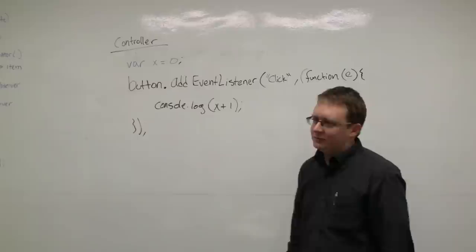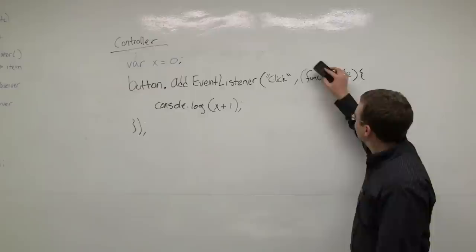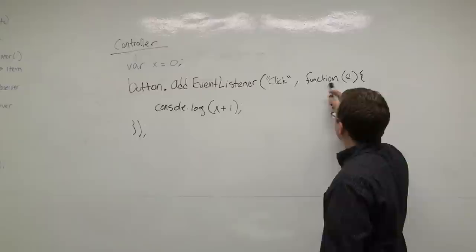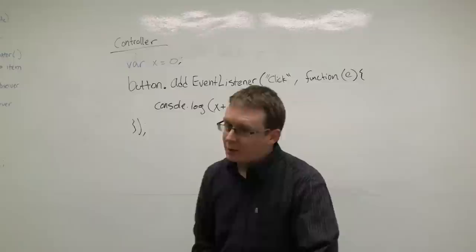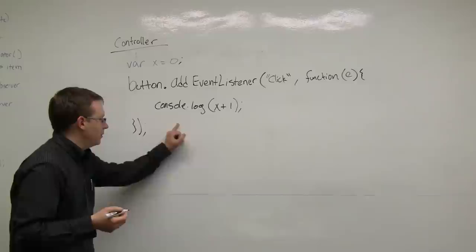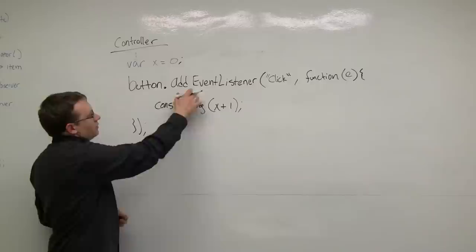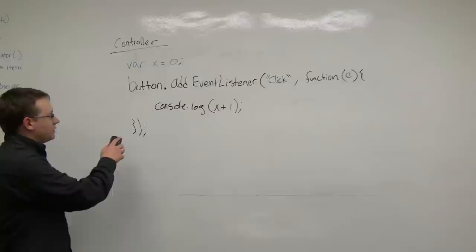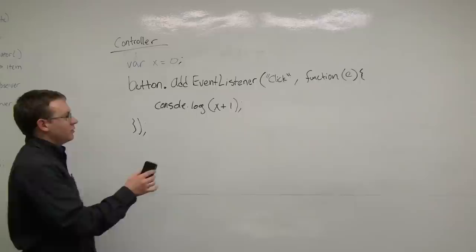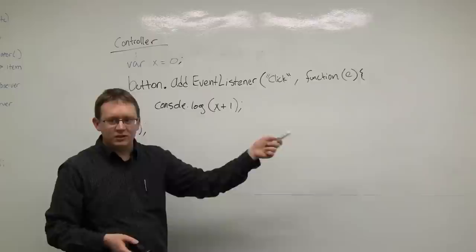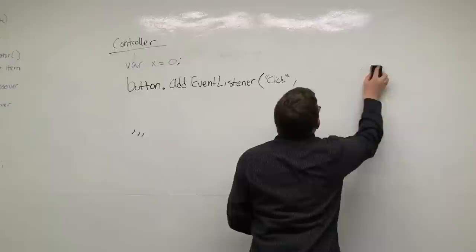There will come a time when you want to stop caring about what a button does. For memory management, get in the habit of removing event listeners when you're done. But if you used an inline anonymous function, you can't remove the listener because you need to pass back the exact function you used to register it — and you can't retrieve that anonymous function.